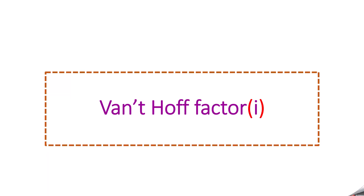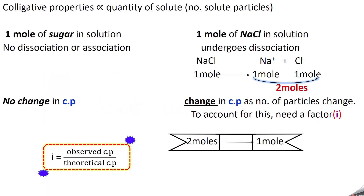The Van't Hoff factor I was introduced by Van't Hoff to quantify abnormal colligative properties and abnormal molar mass. We discussed colligative properties in the last two videos, where we discussed that colligative properties depend upon the number of solute particles. That means colligative properties are directly proportional to the quantity of solute present in the solution.